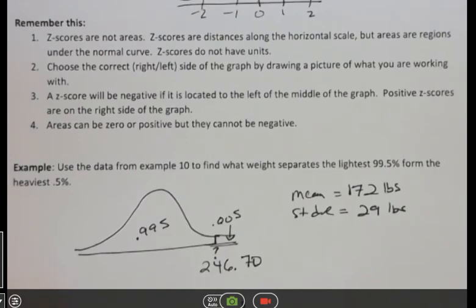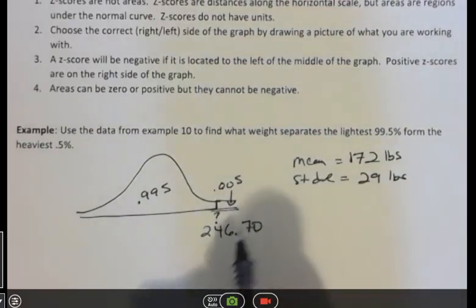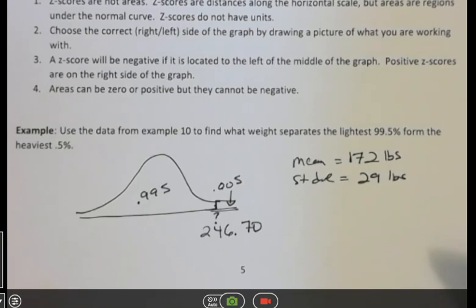So for a second, I was like, wait, that's such a huge number. That's because our mean is not zero and our standard deviation is not one. So the weight right here would be the weight that would separate 99.5% to the left and 5% to the right.